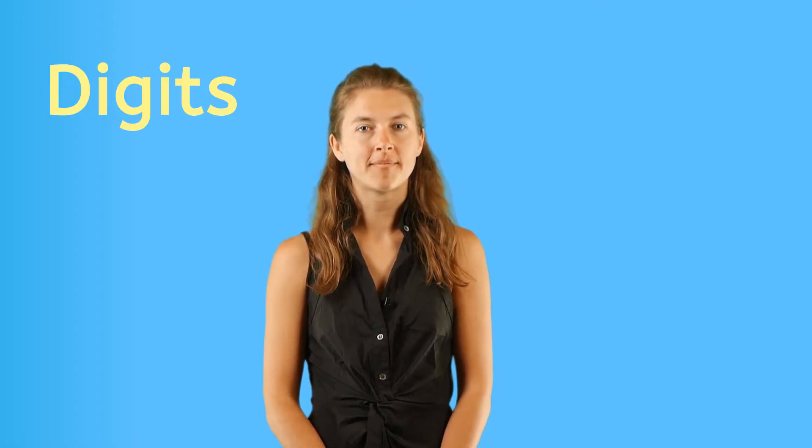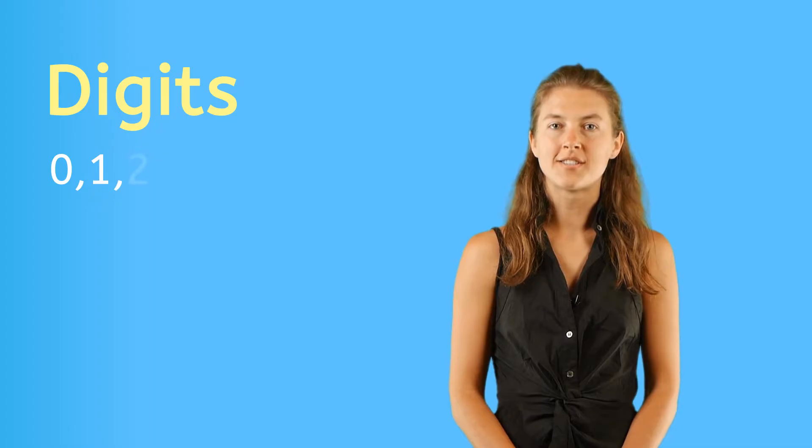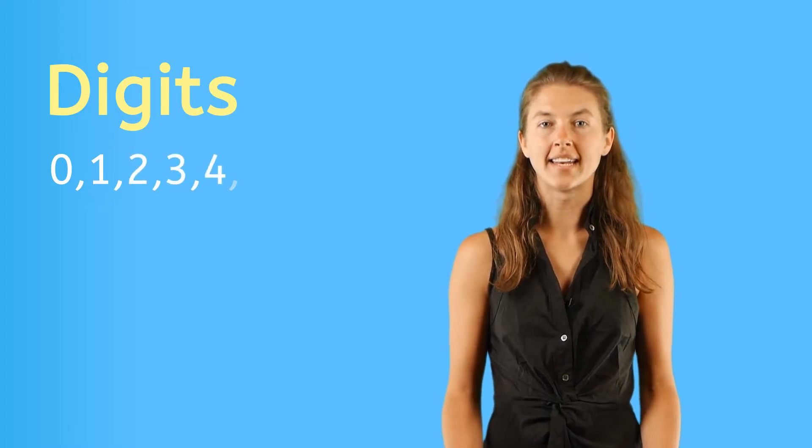Did you know that each number is made up of digits that hold a special value within a number? It's true! A digit is one of the ten single numbers: zero, one, two, and so on until nine.